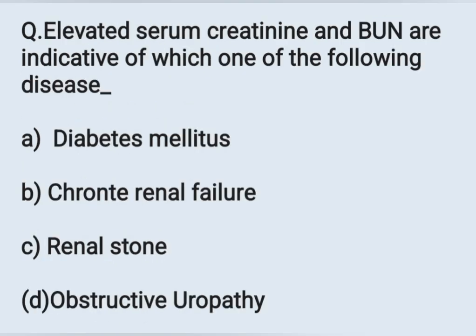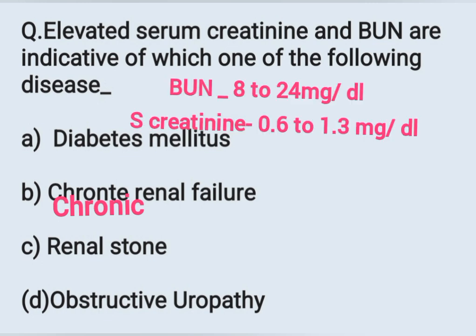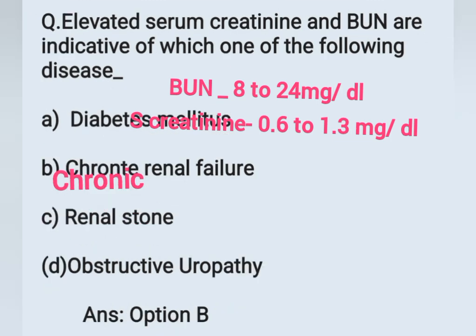The next question: Elevated serum creatinine and BUN are indicative of which disease? Option A: diabetes mellitus, Option B: chronic renal failure, Option C: renal stone, Option D: obstructive uropathy. Normal serum creatinine is 0.6 to 1.3 mg/dL and normal blood urea nitrogen is 8 to 24 mg/dL. These values are elevated in chronic renal failure. Option B is the correct answer.